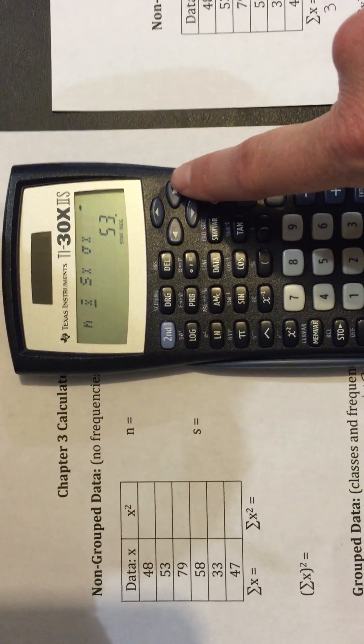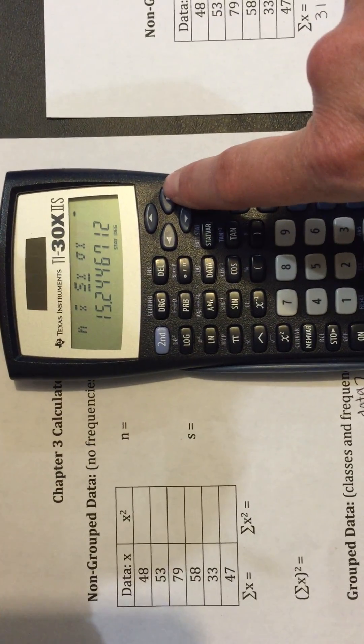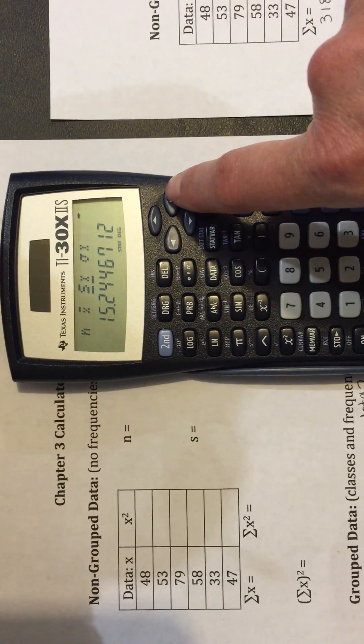Use your arrow. X bar, the mean is 53. S, standard deviation, 15.2.